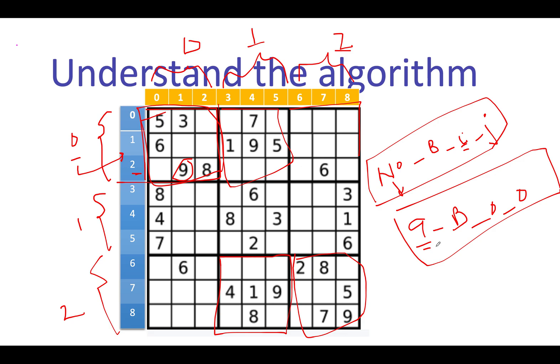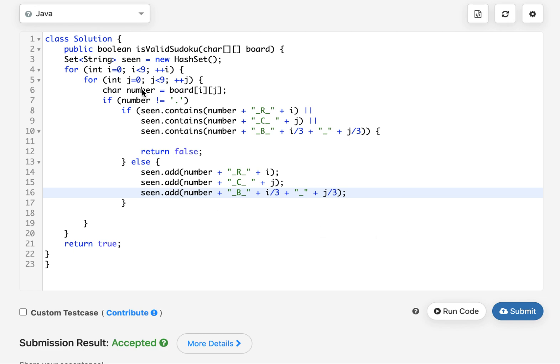Without much ado, let's look at the coding section. The time complexity for this approach would be order of n cross n, and n here is 9, so it's a constant time complexity of 9 squared.